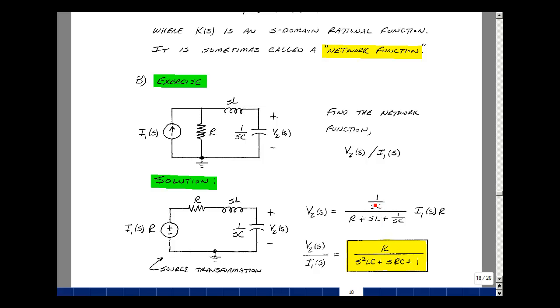Let's multiply the numerator and denominator by sC. So I'll just have an r left over. The denominator would have an sC times r, and then I'd have an s squared LC, and then I'd have just a 1 for this term. This would be my network function, v2 over i1 of s.